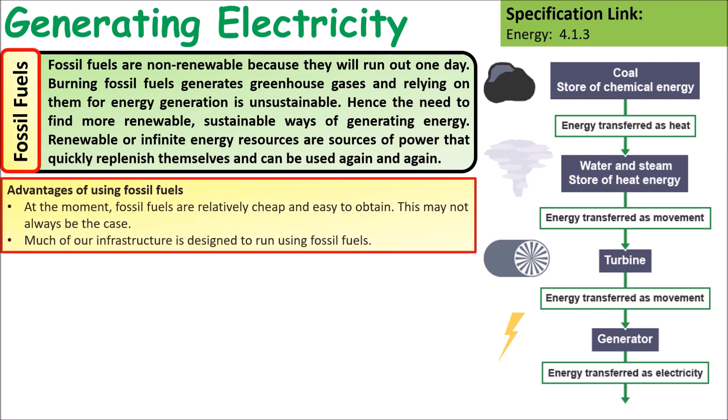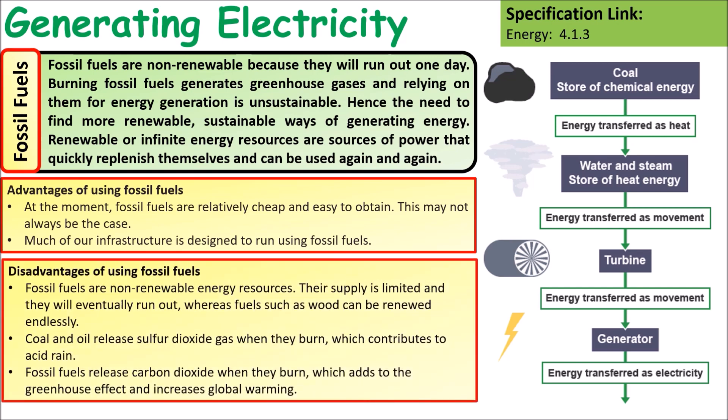The main advantages of fossil fuels are that they are relatively cheap to obtain and all the infrastructure — the power stations — is already there and designed to run on fossil fuels. Major disadvantages are that they are non-renewable with a limited supply, they release sulfur dioxide which causes acid rain, and carbon dioxide which adds to the greenhouse effect and leads to global warming.